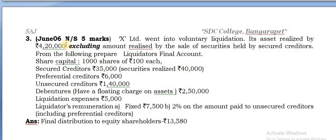Excluding secured, the 4,20,000 represents only the free assets - the other assets. Secured assets realized is 40,000. Then preferential creditors 6,000 and unsecured creditors 1,40,000 - that is the amount payable to them.